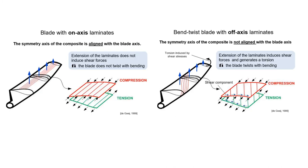Here, the structural comparison of a blade with on-axis laminates and a blade with bend-twist off-axis laminates is shown. In the on-axis blade, the symmetry axis of the composite is aligned with the blade axis, and extension of the laminates does not induce shear forces — the blade does not twist while bending. In the bend-twist blade with off-axis laminates, the symmetry axis is not aligned with the blade axis, the extension of laminates induces shear forces and generates torsion — the blade twists while bending.